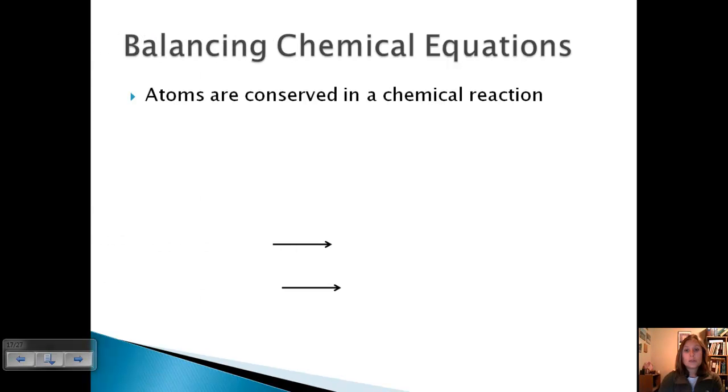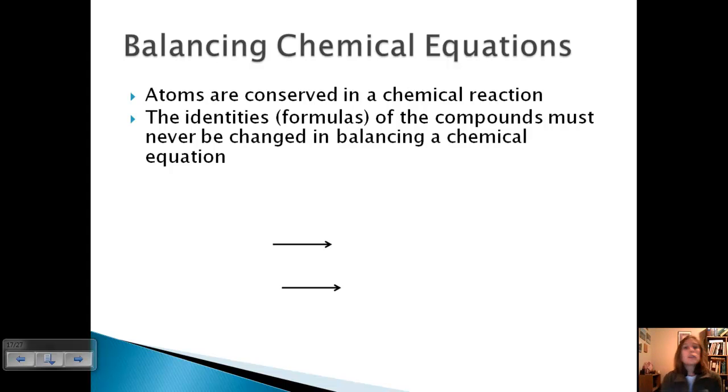Okay, well atoms are conserved in a chemical reaction, meaning you can't gain or lose any - they just change the compounds that they're bonded with. So the identities or the formulas of the compound must never be changed in balancing a chemical equation. What that means is if we have a compound like CO2, well that's carbon dioxide, it's a gas most of the time. If we wanted to add one more oxygen, we cannot change the subscript, so we cannot make it CO3. The only thing we can change are the coefficients in front and then start balancing on the other side of the reaction to get the same number of oxygen atoms. So you can't change the identity of the formula.